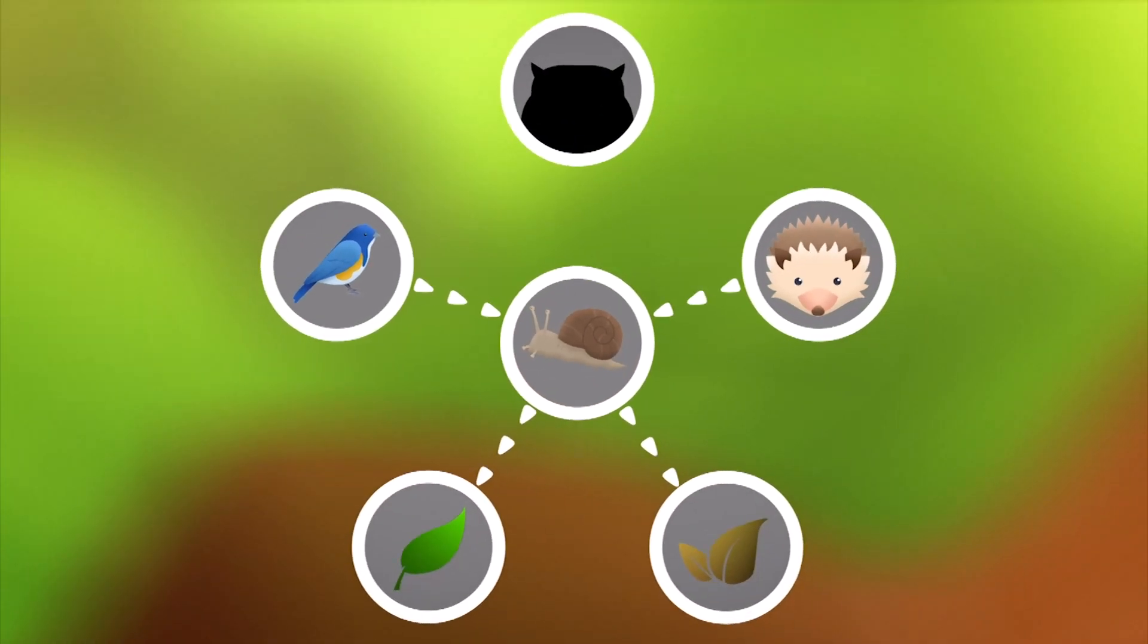Snails in turn provide food for animals like hedgehogs or small birds. Bigger animals like owls then eat the small birds and hedgehogs and so the food web continues.